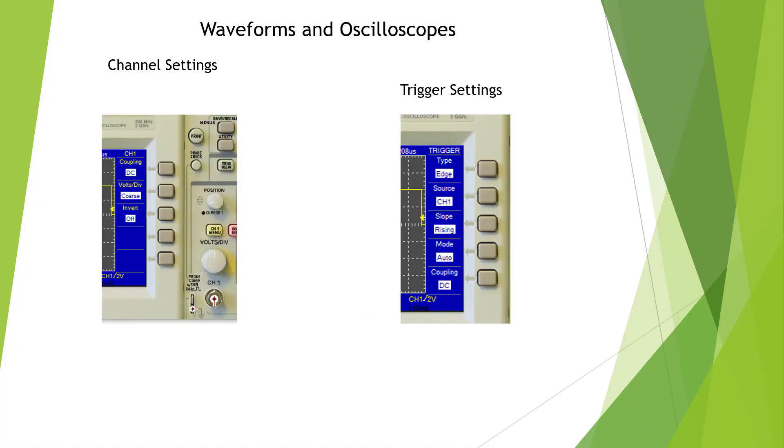Here I'm showing some basic setup. We need to go to channel 1 menu or whichever channel we're using. Push this. And we need to use DC coupling, coarse, and leave invert off. There's a fine setting but you have to turn the knob to get the voltage we need. AC coupling puts a capacitor in line and it will block out all the AC. It's probably okay for what we're doing most of the time but it's best to leave it at DC. If you turn invert on, it will completely invert the signal. Plus will be minus and vice versa. Here we have trigger settings. We need to use edge, the channel we are, rising or falling depending. And mode auto will be fine. Coupling DC and we need to make sure that our arrow is touching the waveform.